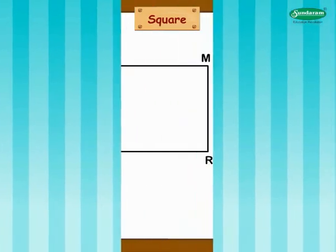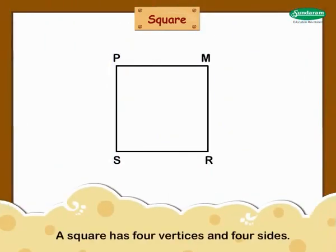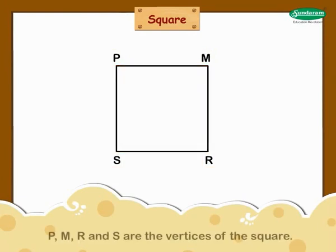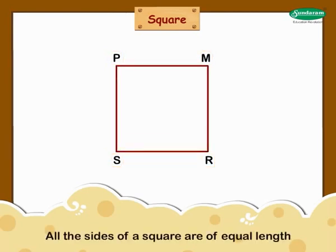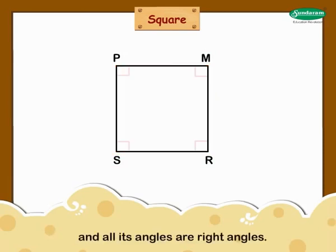Square. A square has four vertices and four sides. In this figure, p, m, r, and s are the vertices of the square. All the sides of a square are of equal length and all its angles are right angles.